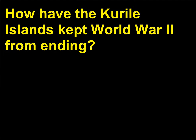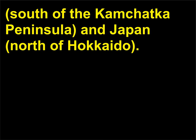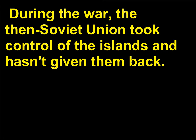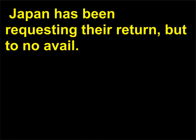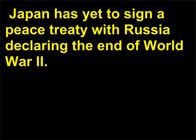How have the Kuril Islands kept World War II from ending? Before World War II, Japan owned this chain of four islands located between Russia, south of the Kamchatka Peninsula, and Japan, north of Hokkaido. During the war, the then-Soviet Union took control of the islands and hasn't given them back. Japan has been requesting their return, but to no avail. Because of the Kuril Island controversy, Japan has yet to sign a peace treaty with Russia declaring the end of World War II.